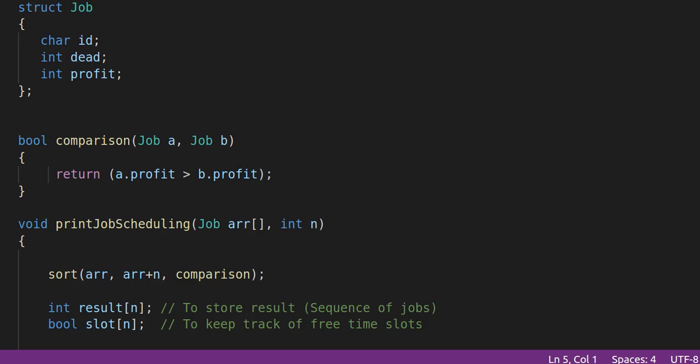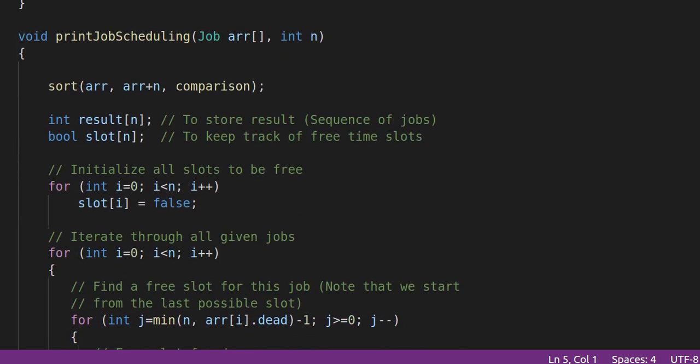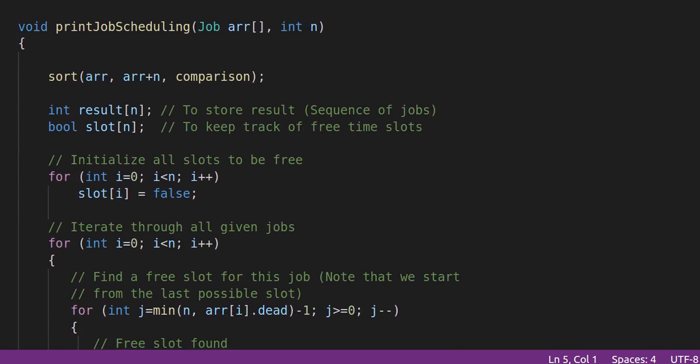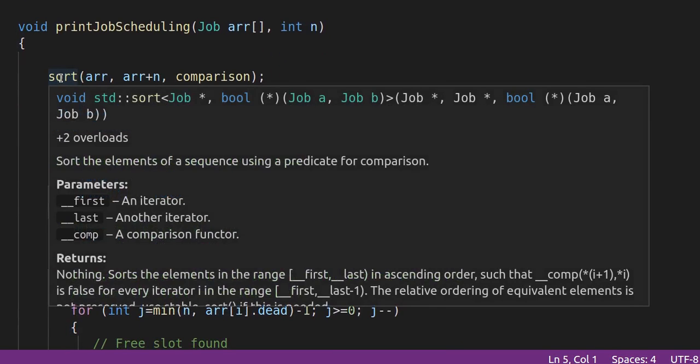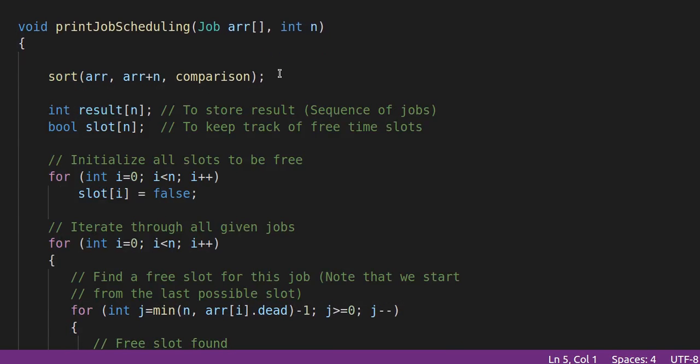We first define a structure for the job, and each job has an id, a deadline, and a profit. We use the comparison function to sort the jobs in the order of decreasing profit. The print job scheduling is the main function using the greedy approach. Here we are sorting the jobs according to decreasing order of their profits.